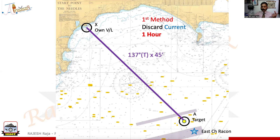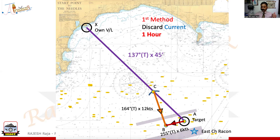First method was discarding the current, meaning I am going to draw only the CTS vector. Starting with the target is always preferable. I run the target for 255 degrees and six nautical miles and measure — arrived Bravo. From Bravo, I take 12 knots, which was my engine speed, and cut an arc on the rendezvous line from Bravo. I get Charlie. Join Charlie Bravo — that is your course. I found out 164 degrees, 12 nautical miles. So I finished the CTS triangle. With this I can already get two answers: my course, and by finding the relative speed, I can find the rendezvous time.